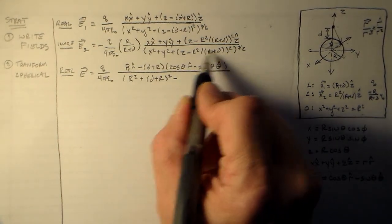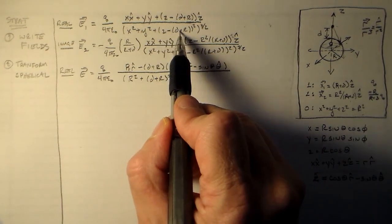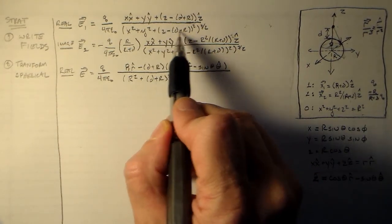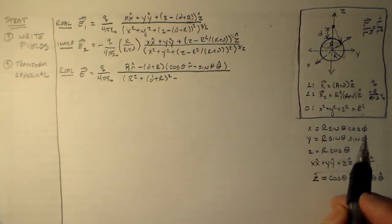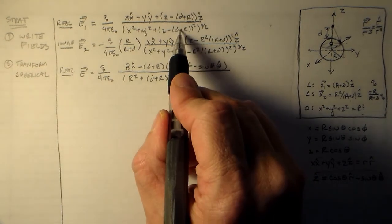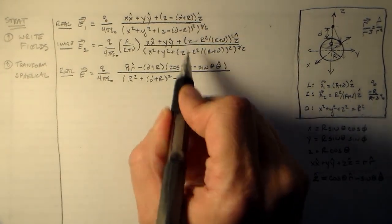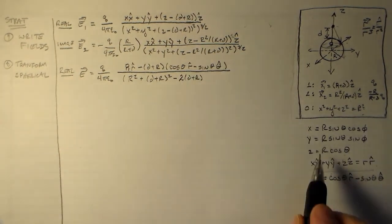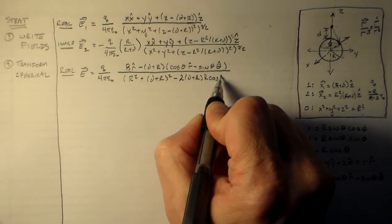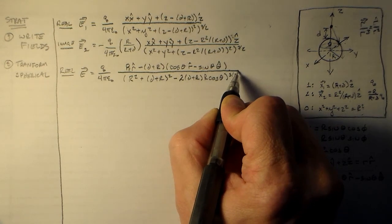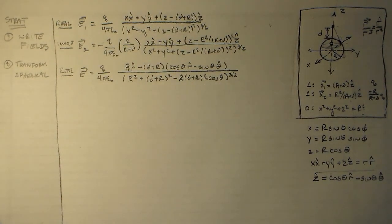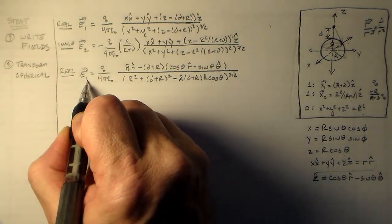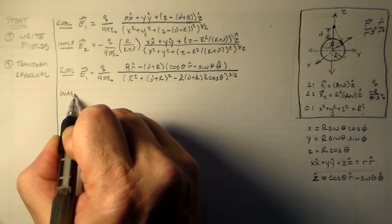Now we square all these things. We have x² + y² + z². Since x² + y² + z² = r², and we have (d + r)² in there, plus the combination: 2(d + r) times z, and z = r cosθ. So those are our squared terms going to the three-halves power. That handles our field for the real charge in spherical coordinates.